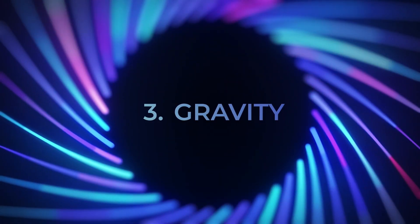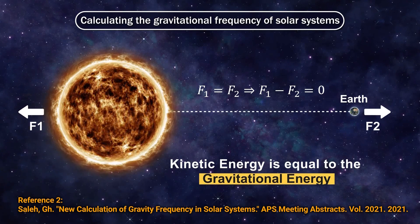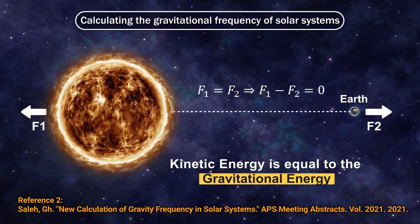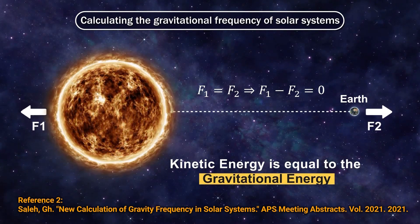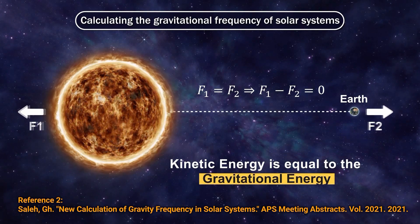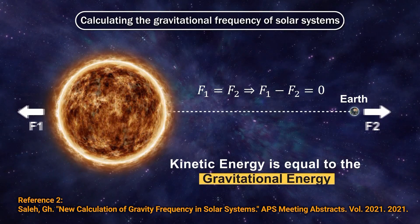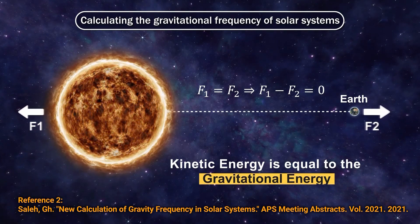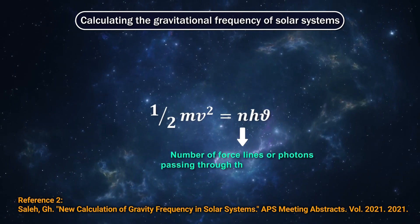In previous articles, we have calculated the frequency of gravitational waves within the solar system. By the equation of the kinetic energy of the planets with the energy derived from Mr. Planck's energy formula with the coefficient n representing the number of fluxes passing through each object, we have calculated the gravitational frequency between the Sun and the planets of the solar system and then between the natural satellites and the planets. We have found that the range of the frequency of gravitational waves is between 10 to the power of 17 Hz to 10 to the power of 21 Hz. Kinetic energy is equal to gravitational energy. So the relation between the energy of a planet and electromagnetic waves will be, where n is the number of force lines passing through the surface of the planet.